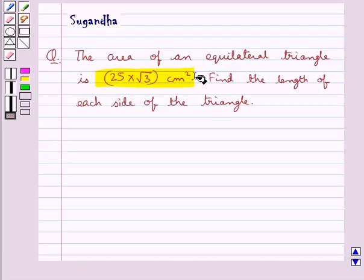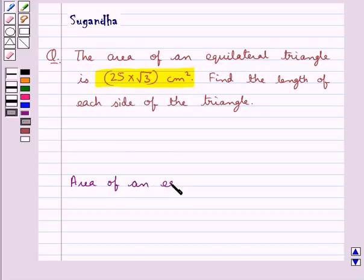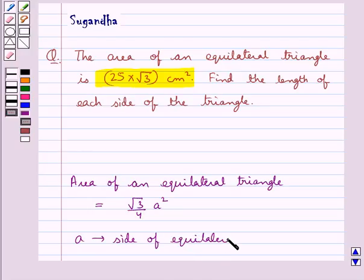Find the length of each side of the triangle. We know that area of an equilateral triangle is equal to root 3 upon 4a square, where A is the side of equilateral triangle. This is the key idea for this question.